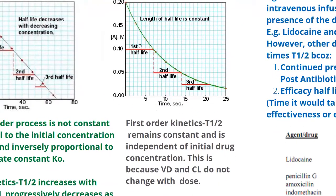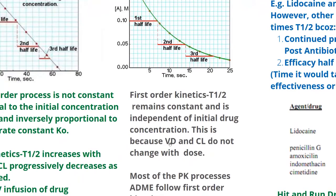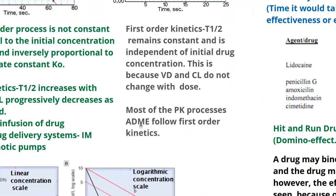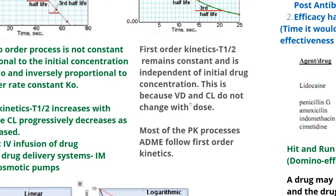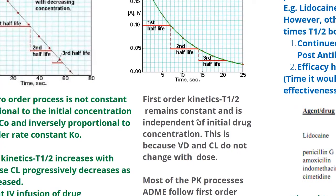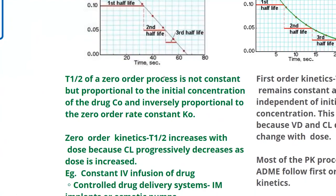In first order kinetics, t½ remains constant and is independent of the initial concentration of the drug, because the volume of distribution and clearance do not change with dose. Most pharmacokinetic processes — ADME, which stands for absorption, distribution, metabolism, and elimination — follow first order kinetics for most drugs, because drugs used at therapeutic levels are in low doses. At low doses, the body has ample enzymes for metabolism and elimination, but when a toxic dose is given, it jumps to zero order kinetics.